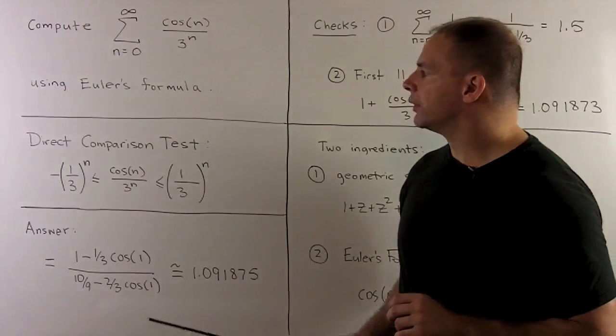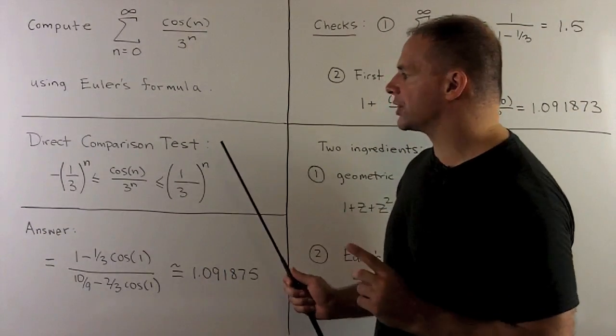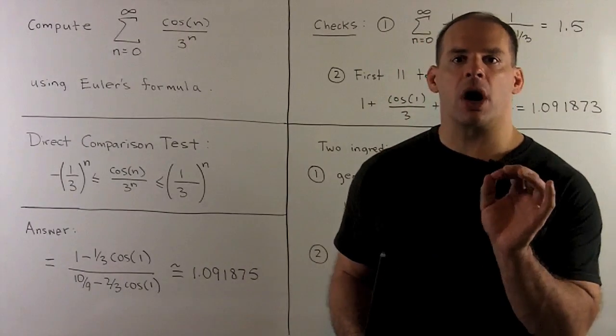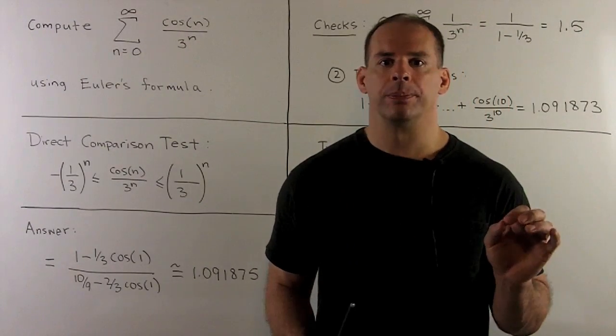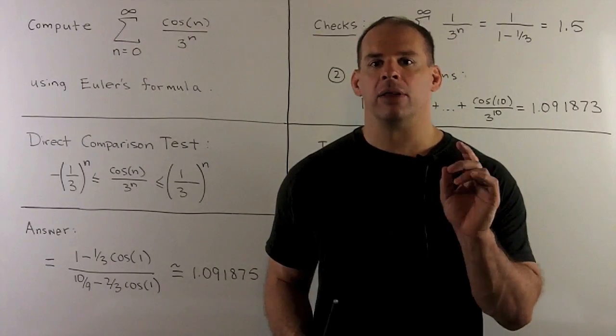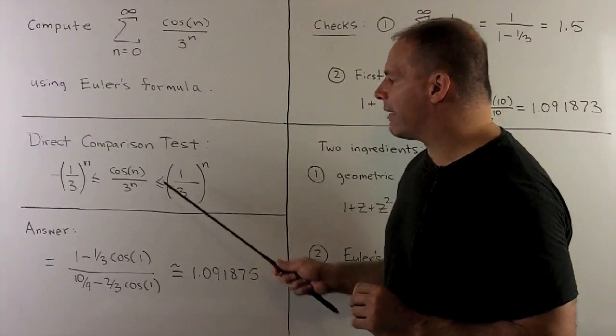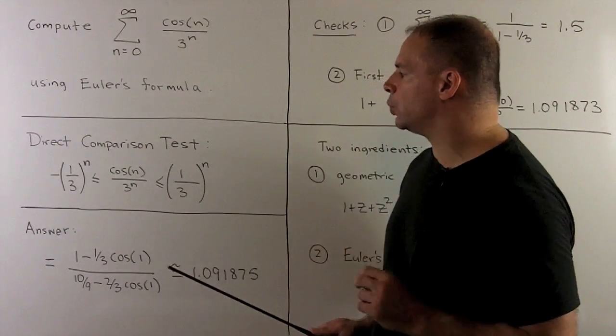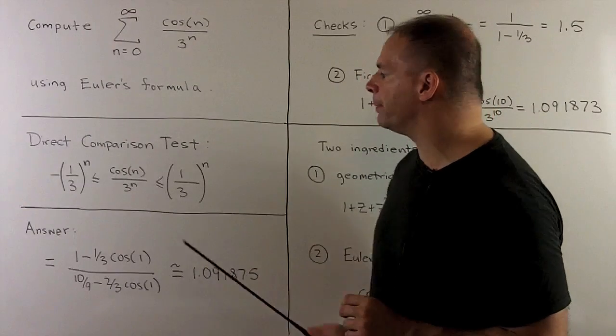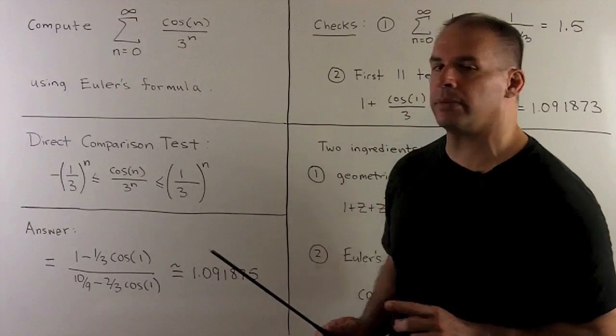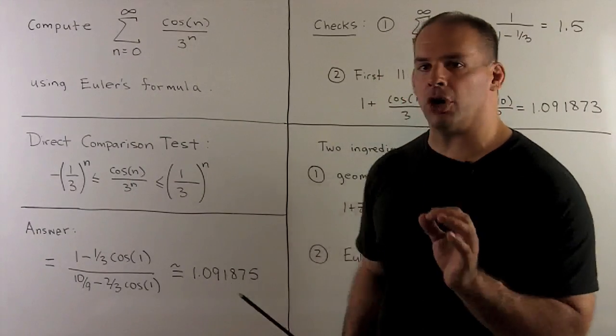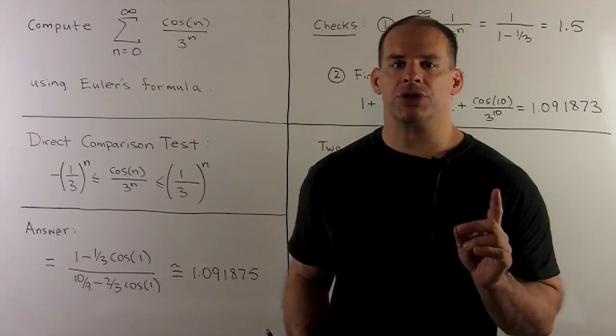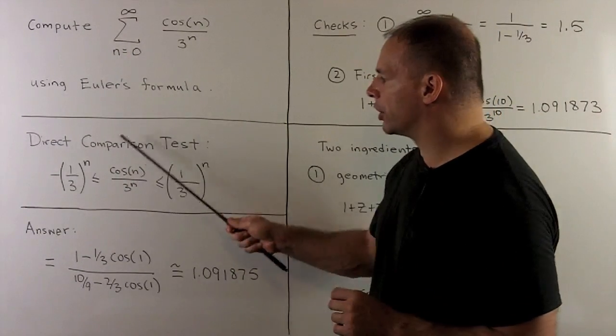Now, for convergence, we'll use a direct comparison test. So we'll start by noting cosine of anything is between minus 1 and 1. If we divide through by 3 to the n, we'll have that the terms of our series are always between minus 1 third to the n and 1 third to the n. The series that go with the terms on the end are going to be convergent geometric series, so our series is going to converge also.